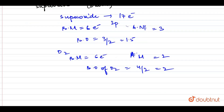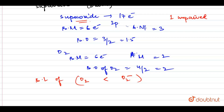Since the bond order of O₂ is higher, that means the bond length of O₂ is less than that of O₂⁻. Also, O₂⁻ which is superoxide has 1 unpaired electron present, whereas O₂ has 2 unpaired electrons.